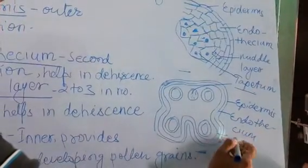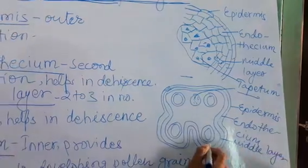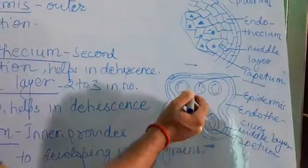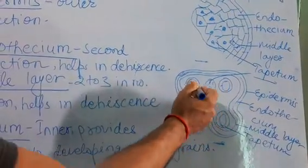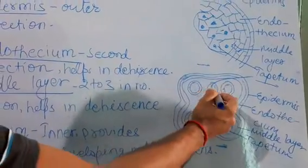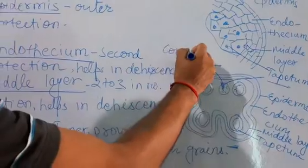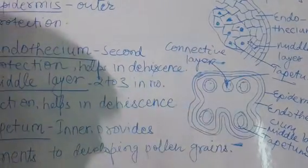In the second diagram, the first layer is the epidermis, the second layer is the endothecium, the third layer is the middle layer, and the rounded structures inside are the tapetum — there are four tapetum units here. On the upper side between the two tapetum units there is the connective tissue layer.